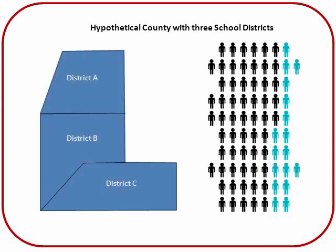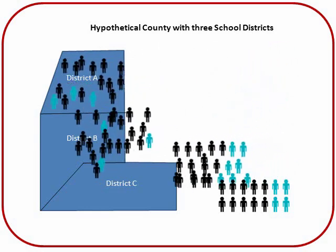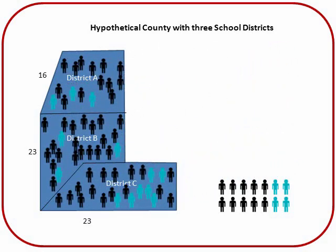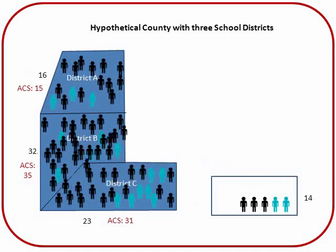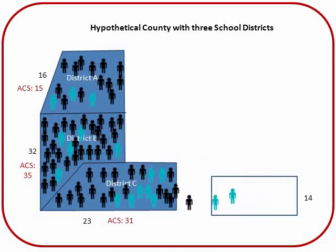We allocate each relevant child tax exemption to a school district based on the address on the return. Some returns can't be assigned to a specific district by address. For these, we look at ACS five-year poverty estimates. We distribute these additional exemptions to any districts with relevant tax-based exemptions below their ACS estimate, to minimize differences from the ACS numbers while staying as close as possible to ACS ratios. In this example, District A is already over the ACS number, so 9 of the 14 go to District B and 5 to District C. This allows us to calculate a poverty rate based on tax returns, as the example shows for District B.